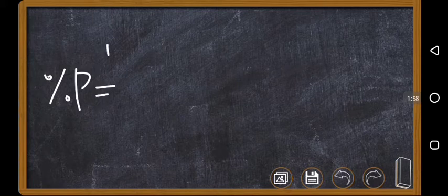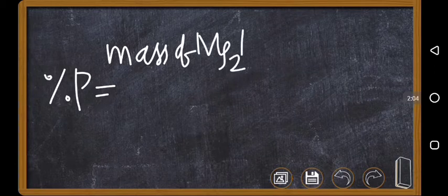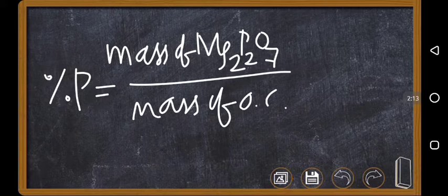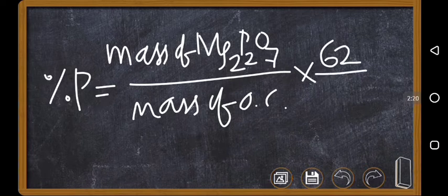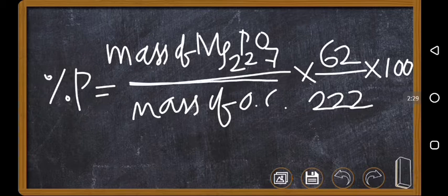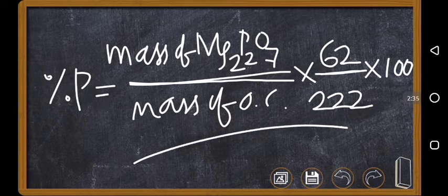The formula for percentage of phosphorus is: percentage of phosphorus equals mass of Mg₂P₂O₇ (magnesium pyrophosphate, found experimentally) divided by mass of organic compound, multiplied by 62 divided by 222, into 100. In Mg₂P₂O₇ there are two phosphorus atoms, so atomic mass contribution is 62, and the molecular mass of Mg₂P₂O₇ is 222. This gives the percentage of phosphorus by the first Carius method.